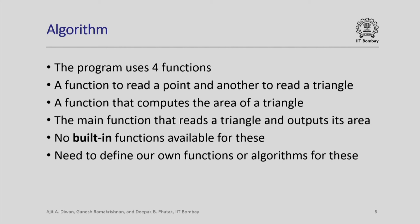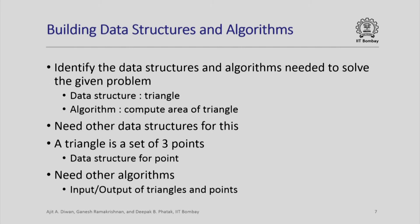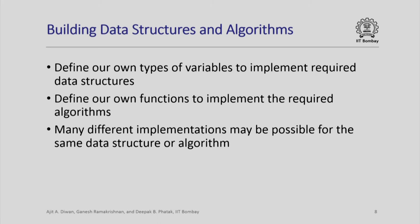The main point to note is we do not have built-in functions for these types, and you need to build your own data structures and algorithms for reading and manipulating them. In general, in a programming problem you need to identify the data structures and algorithms needed to solve the given problem. In this case the data structure needed was a triangle, and the algorithm needed was how to compute the area. But for this you may also need other data structures — there is no direct way of representing a triangle, so you need a data structure for points as well. So we need to define our own types of variables to implement required data structures, and our own functions to implement the required algorithms.